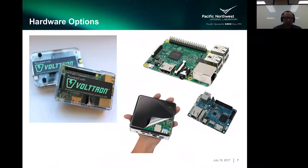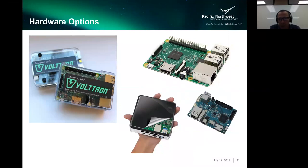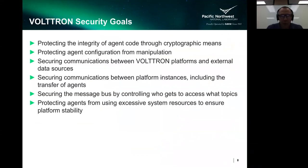Regarding hardware options — we get the question of what VOLTTRON runs on. VOLTTRON pretty much runs on anything, from a Raspberry Pi to Intel-based platforms. A lot of our users actually use Raspberry Pis, which is a dramatic reduction in cost to deploy systems compared to a traditional control system platform. You can run it on basically anything that runs Linux. VOLTTRON is built on Linux.